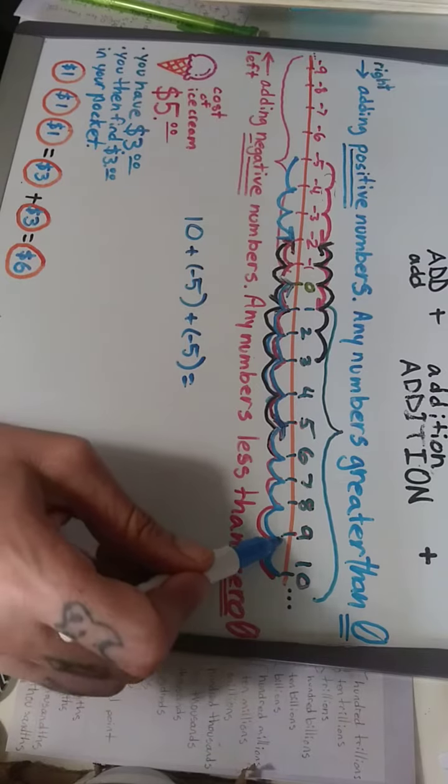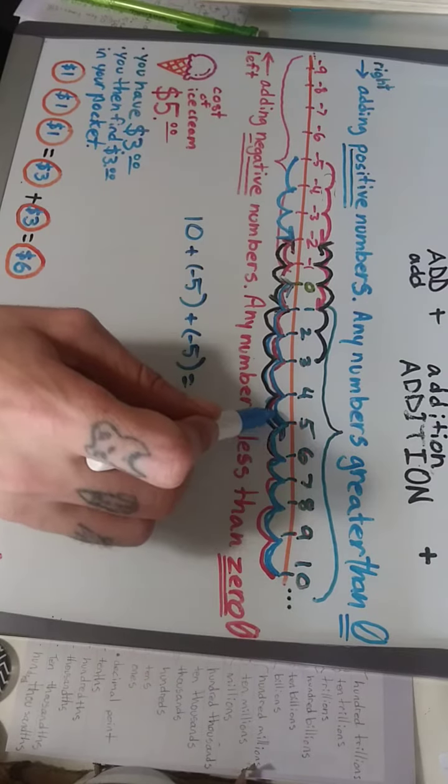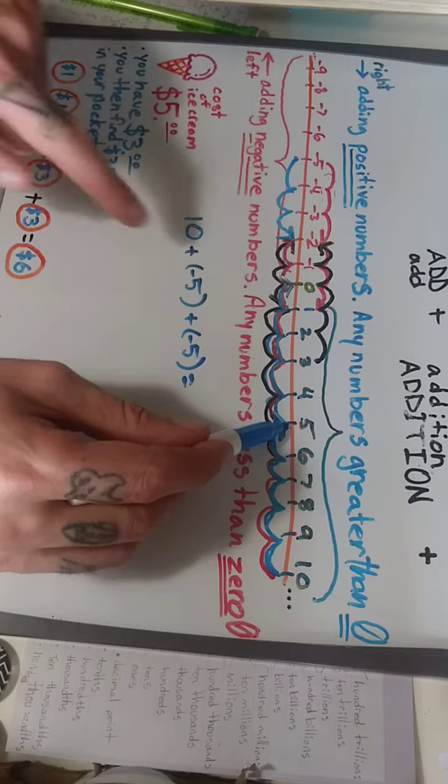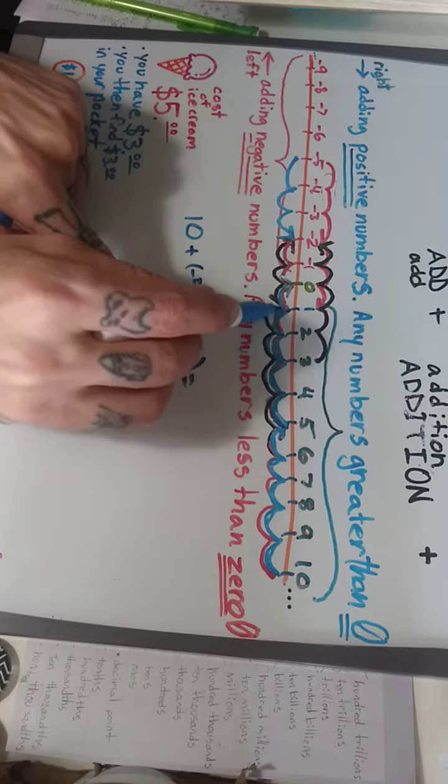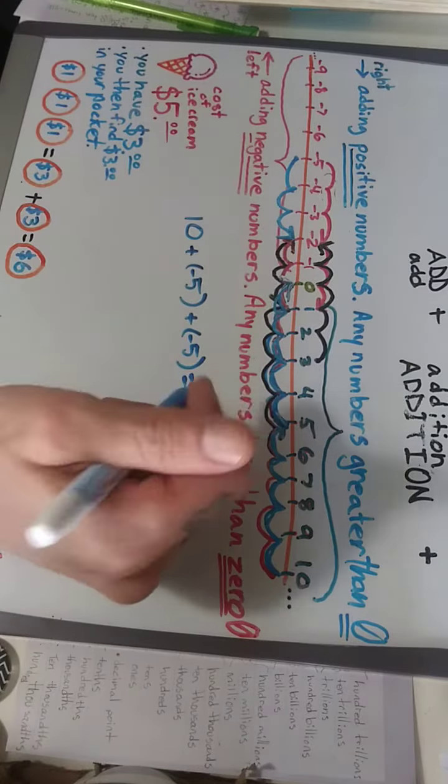and we move over one, two, three, four, five for the first ice cream, and then for the second ice cream we move over one, two, three, four, five, and that leaves us at zero dollars.